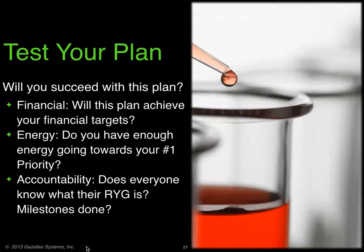And then accountability. It's so important to have red, yellow, green success criteria, because in the do rhythm you'll have accountability to succeeding. When you have accountability, you can talk about what adjustments you need to make if you're not achieving the plan. Clear green criteria is critical so you can make adjustments later.